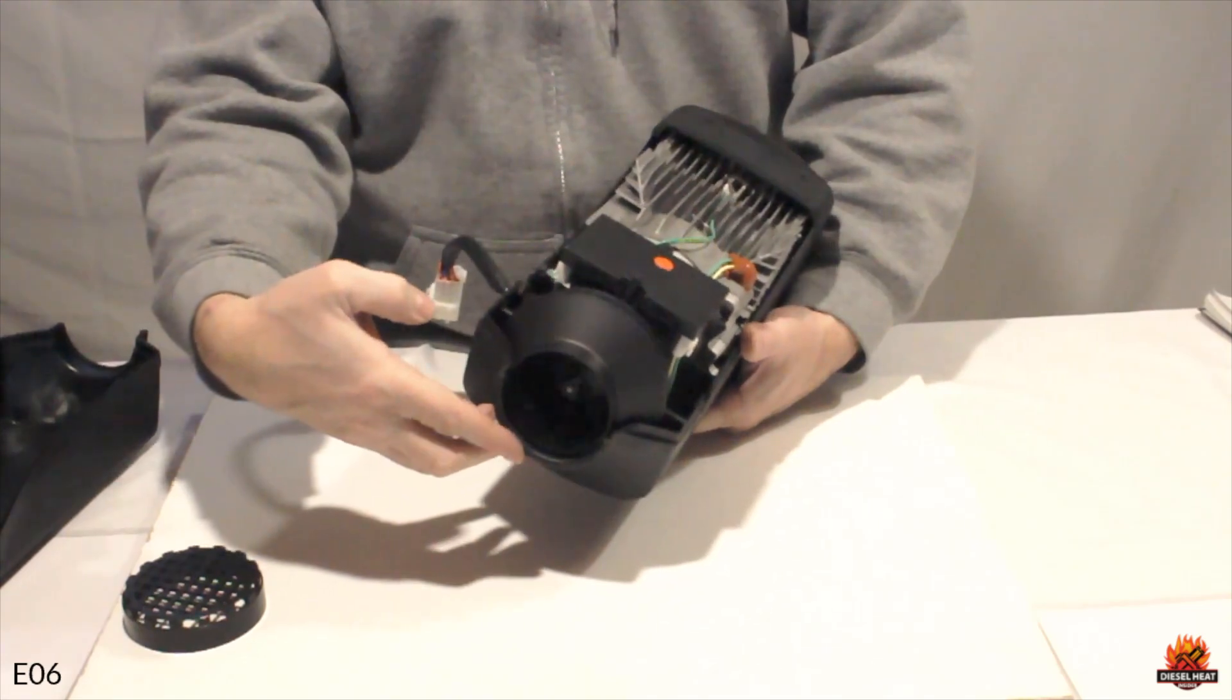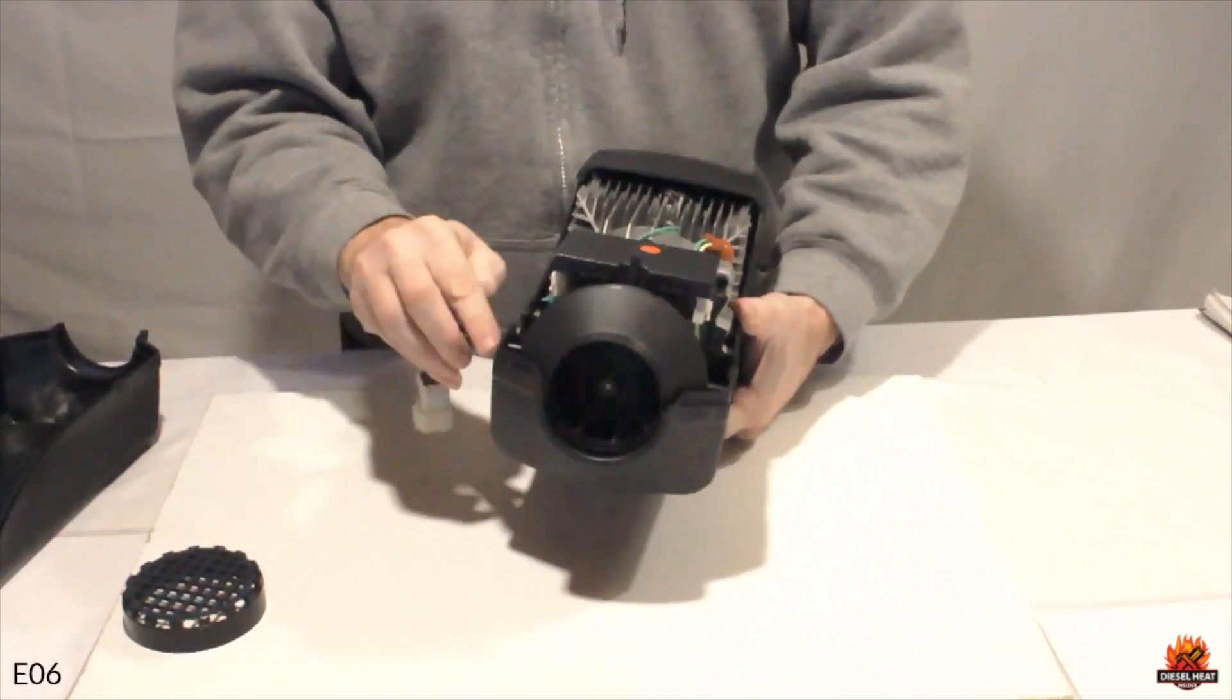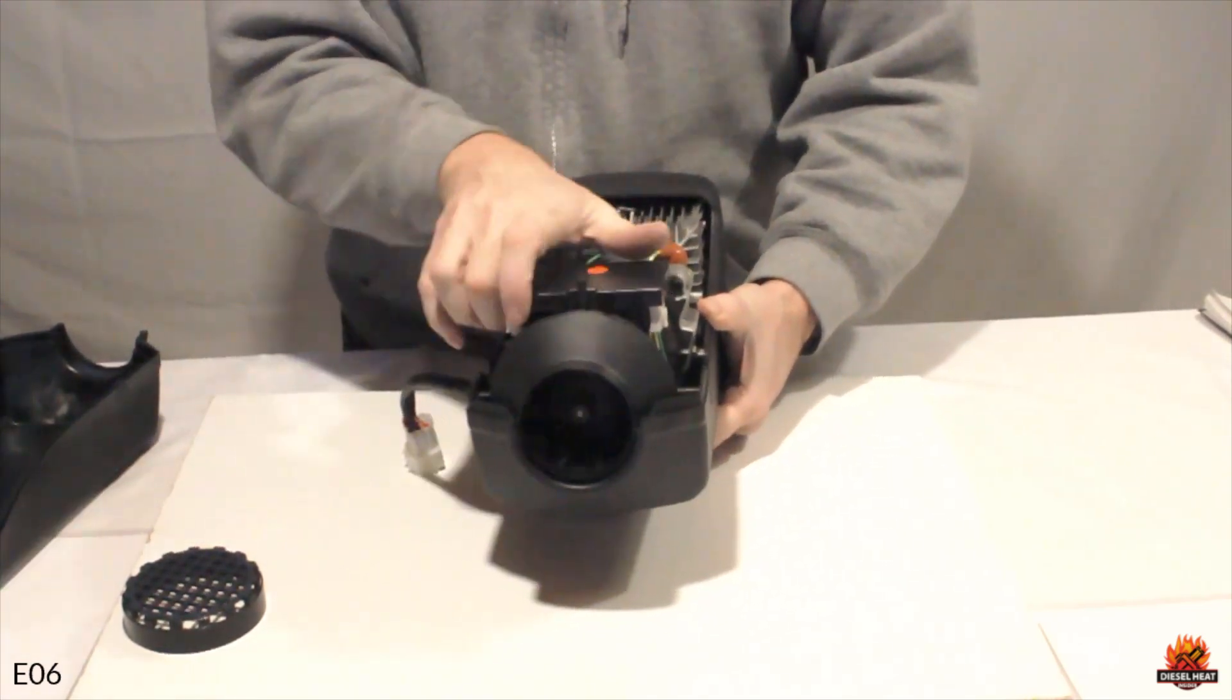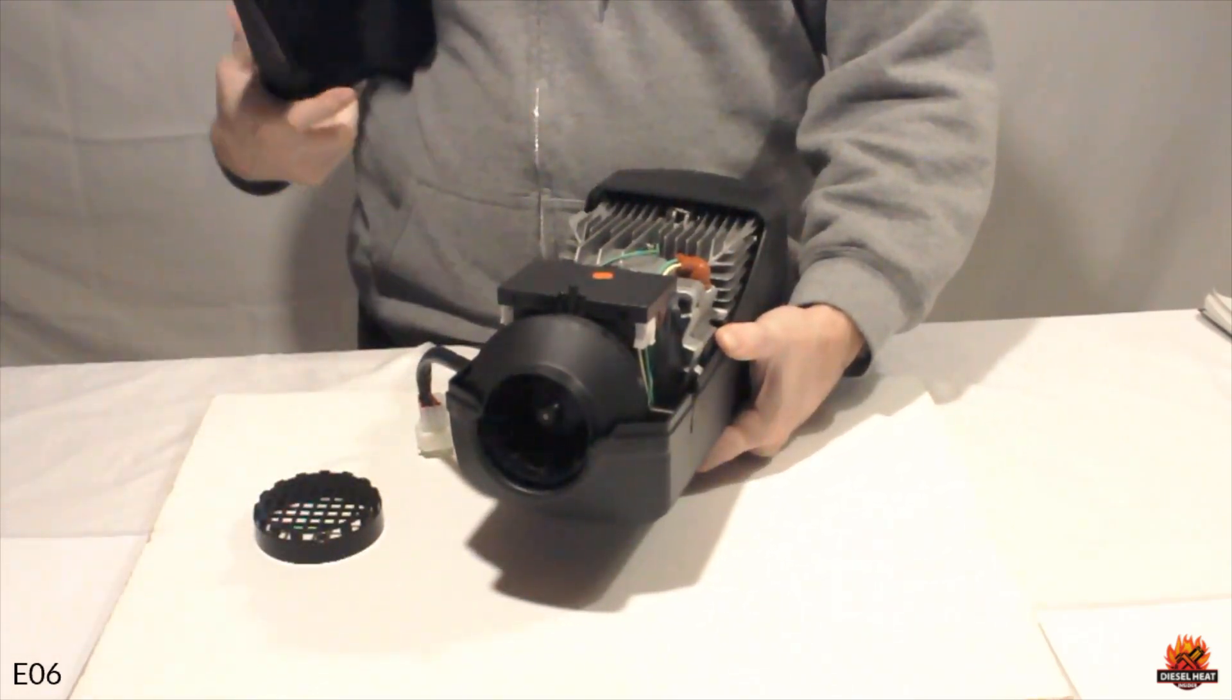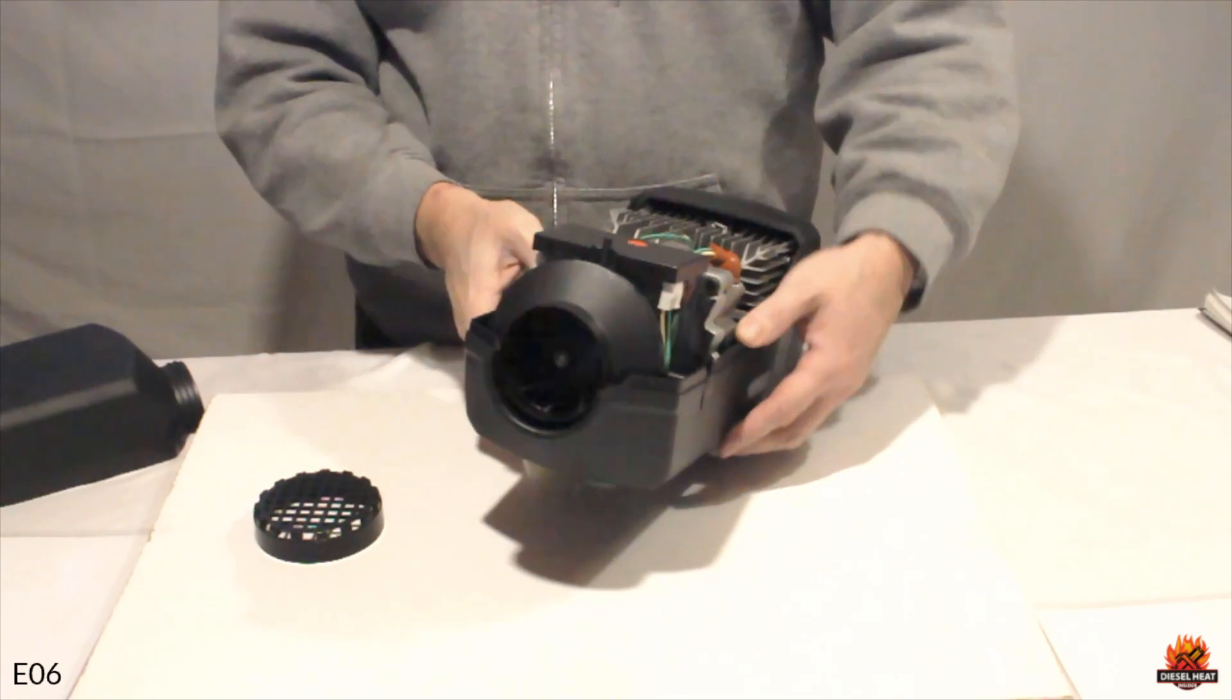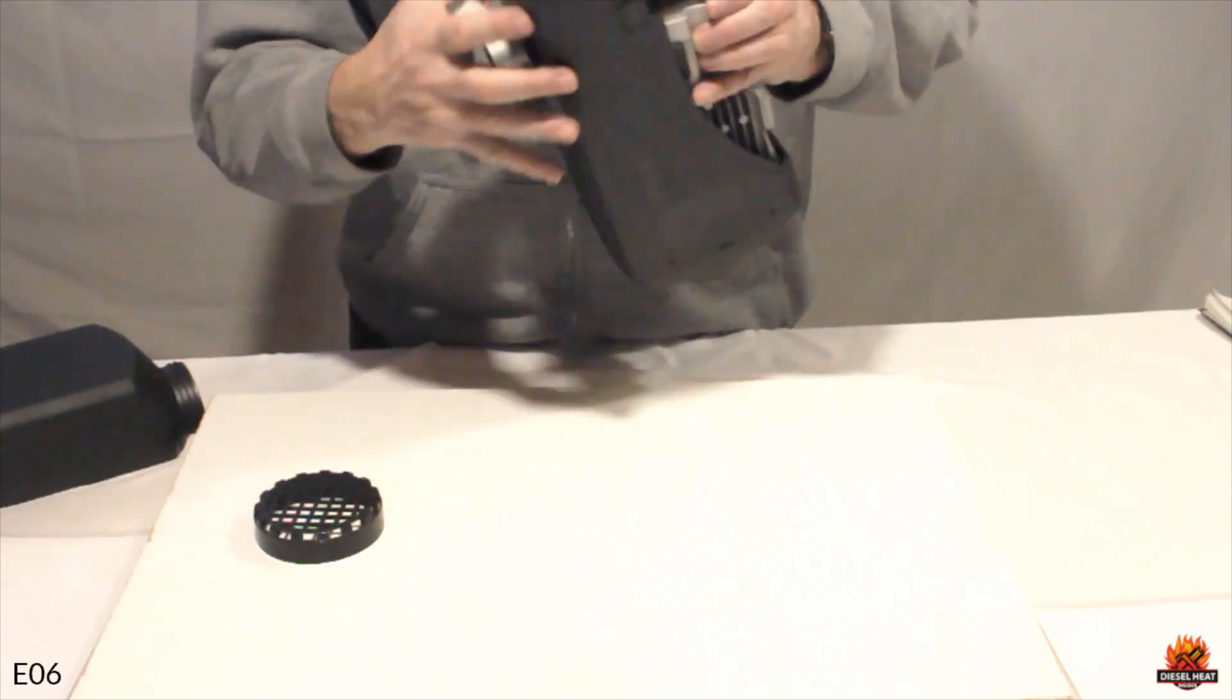Occasionally, the external housing of the heater may be slightly pushed in, restricting the fan's movement. To investigate, unscrew the circular component at the fan end of the heater, lift the lid, and examine if the casing is creating friction against the fan.